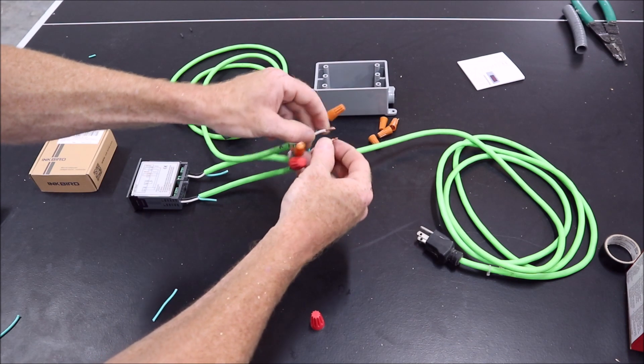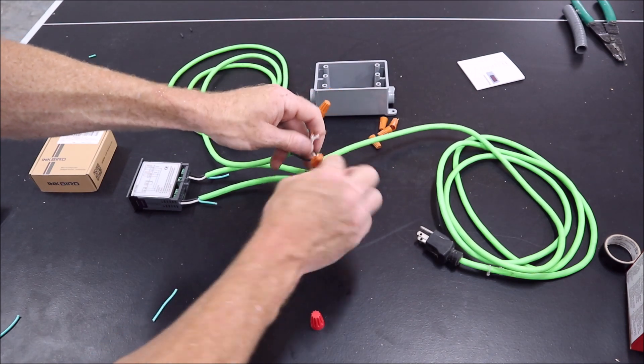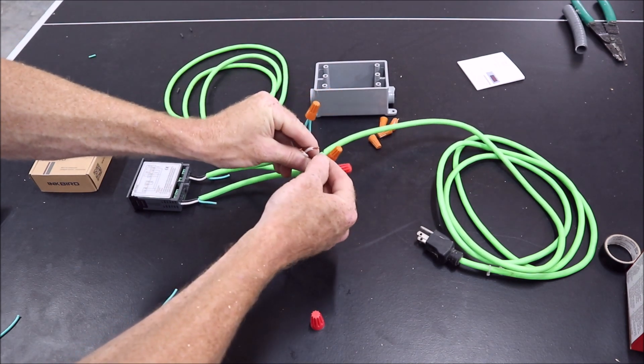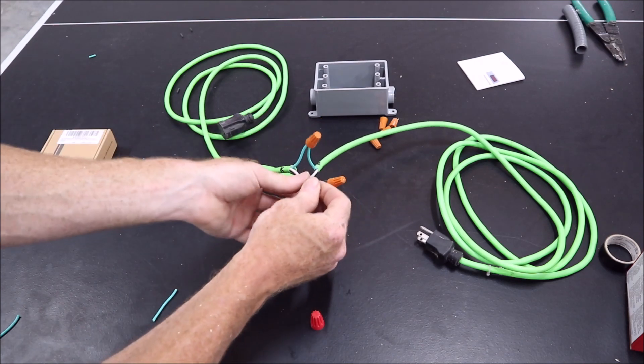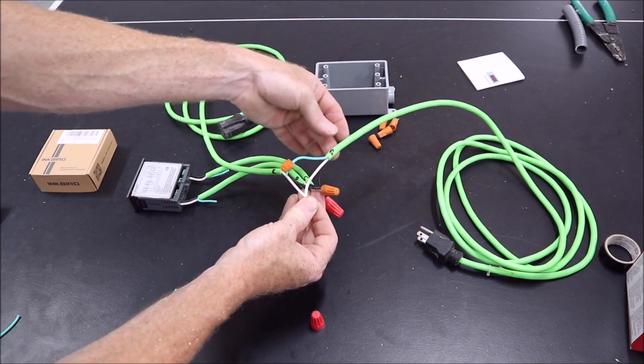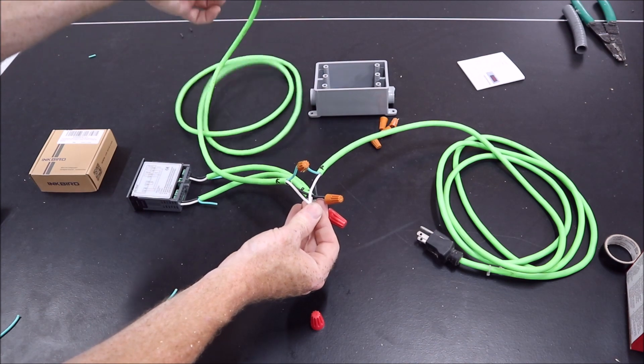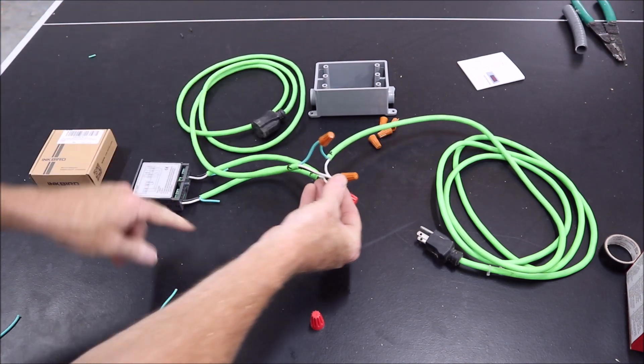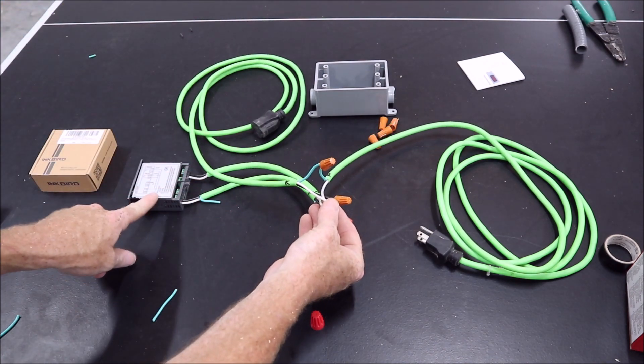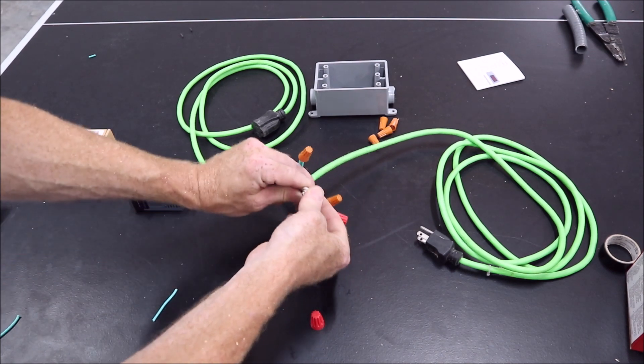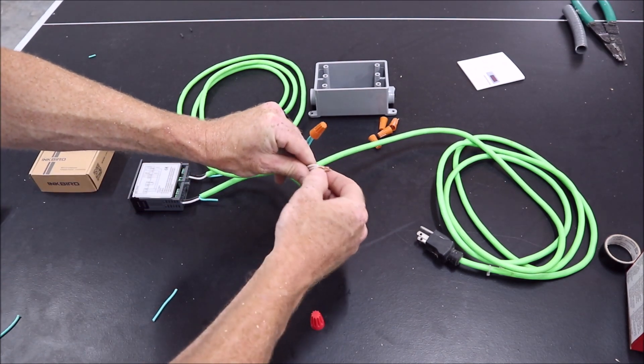Then you have three neutral wires left over, so you're just going to run all three of your whites together. One comes from the wall, one goes out to the keezer, and one comes over to feed your temperature control unit. You're going to put those three together.